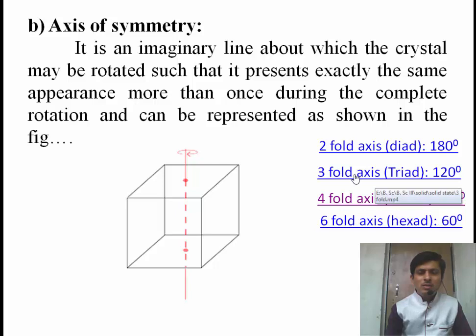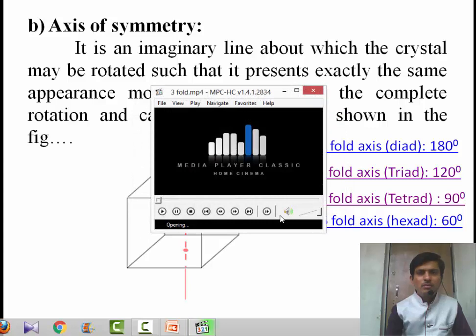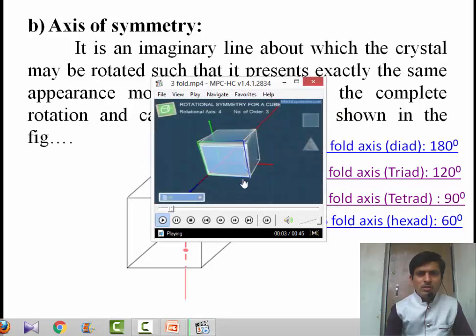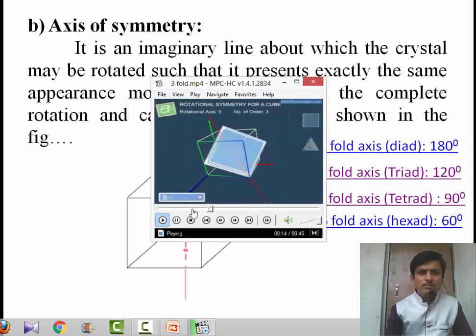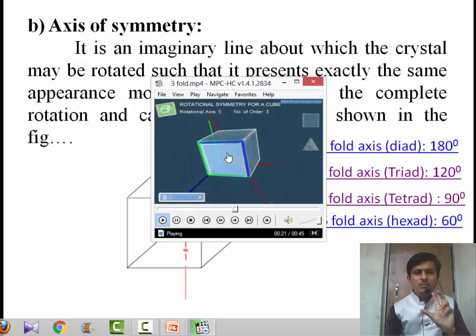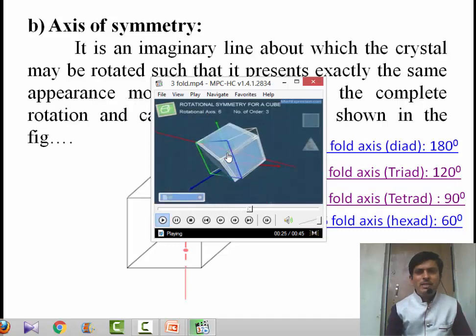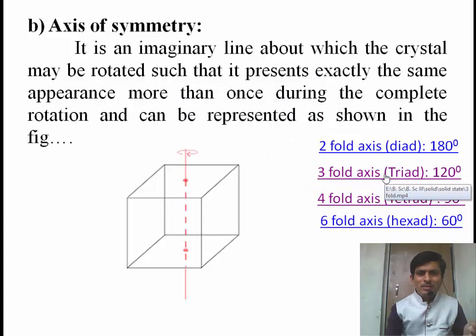Similarly, the 3-fold axis of symmetry: 3-fold means during a complete rotation the crystal shows the same appearance 3 times. This imaginary line passes through the opposite corners of the cube — 1, 2, and 3. So during complete rotation it shows the same appearance 3 times. That means during 360-degree rotation, after each 120 degrees, the crystal shows the same appearance. This axis is called the 3-fold axis of symmetry, or triad.